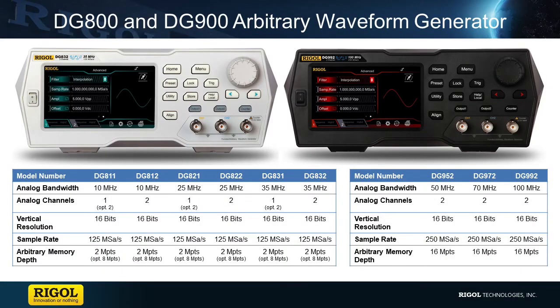The DG800 and DG900 series features 16-bit vertical resolution, making these the world's most affordable 16-bit waveform generators on the market. With a 4.3-inch touchscreen display, fanless design, two fully functional channels, and SiFi 2 technology, these instruments give engineers increased control, accuracy, and flexibility over their waveforms — providing uncompromised performance at an unprecedented value.